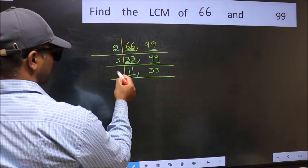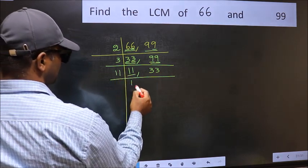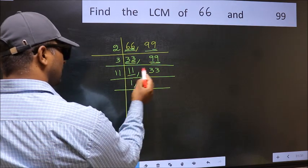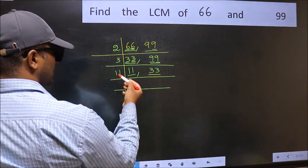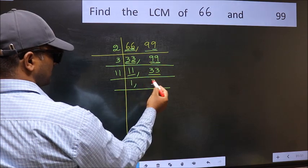Now here we have 11, 11 is a prime number. So 11 ones 11. The other number 33, when do we get 33 in 11 table? 11, 3s 33.